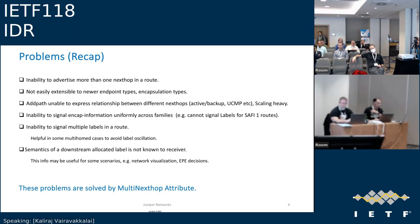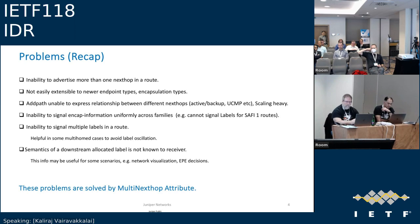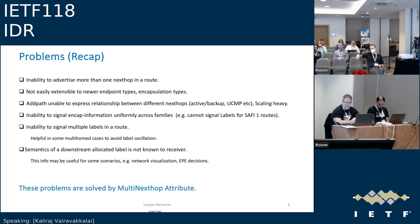The problems with the current approach: we are unable to advertise more than one next hop easily, it's not easily extensible to newer endpoint types or encapsulation types, and AddPath is the only way to express more than one next hop for a route. It is unable to express the relationship between next hops and is scaling-heavy. Also, you cannot signal encapsulation information uniformly across families — for example, you cannot signal labels for SAFI-1 routes, which is what the 4PE or 6PE use case will touch on.